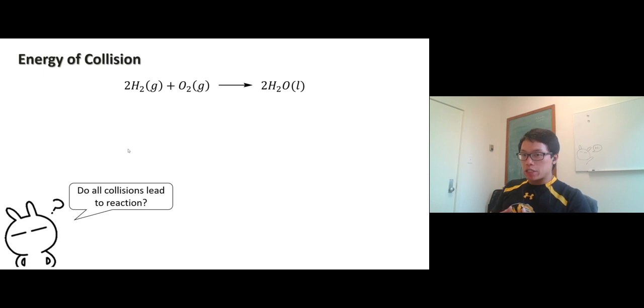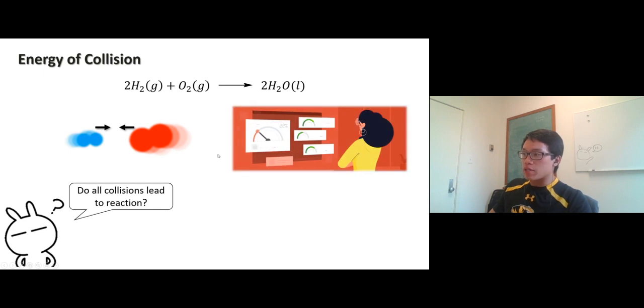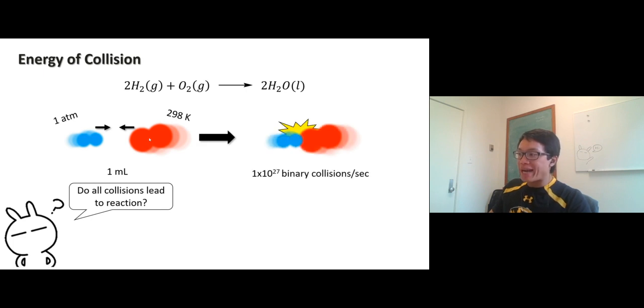There's a bit of debate about this. If all collisions lead to reaction, think about it. In a gas phase, I have oxygen and hydrogen gas colliding. There's a calculation at 298 Kelvin in one milliliter volume: there are 10 to the 27 binary collisions per second. Is that a lot? Binary means two molecules collide.